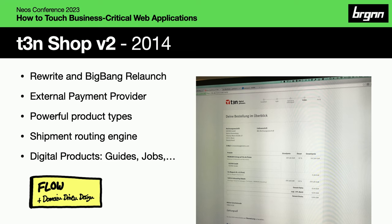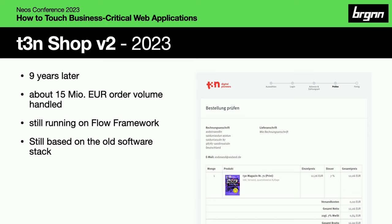Now comes the interesting point. I looked at the website yesterday and it's still live — the old store from 2014. We handled about 50 million euro order volume during the launch and it's still based on Float. The software survived me — I left the company in 2020, and that's great. But I asked myself: what is the strategy? Should they put in more maintenance now or is it a build-and-forget strategy? To be honest, I don't know.